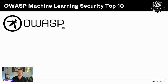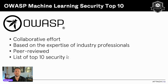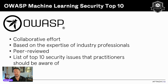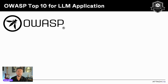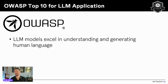The OWASP Machine Learning Top 10 project is a collaborative effort drawing on industry expertise to create a comprehensive, peer-reviewed guide to the top 10 security issues for machine learning or AI systems. Large Language Models, or LLMs — such as GPT, ChatGPT, GPT-4, LLaMA, and Gemini — are AI models that excel in understanding and generating human language. OWASP has put out a separate Top 10 for LLM Applications project, similar to the machine learning top 10, but focusing specifically on LLM systems.